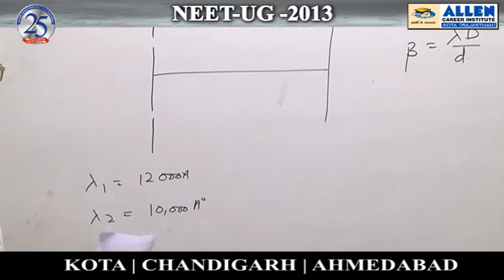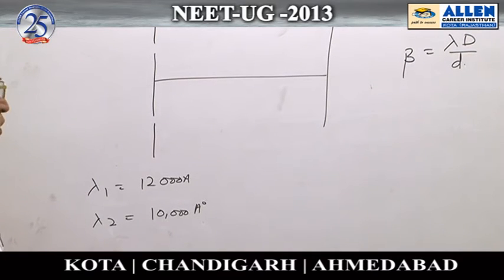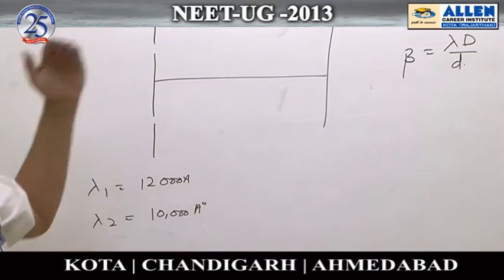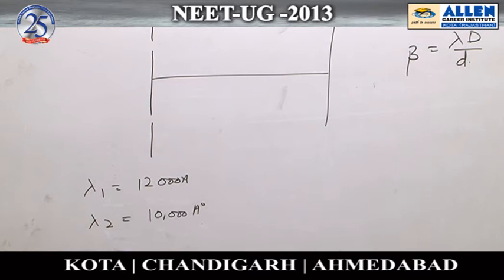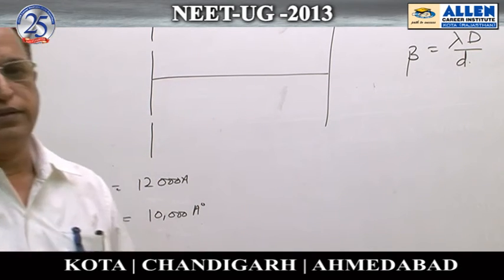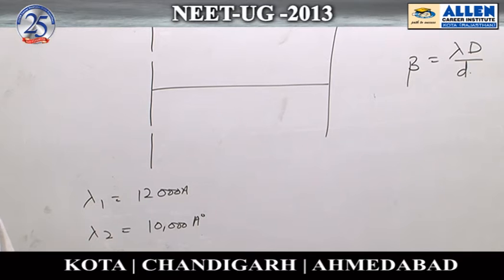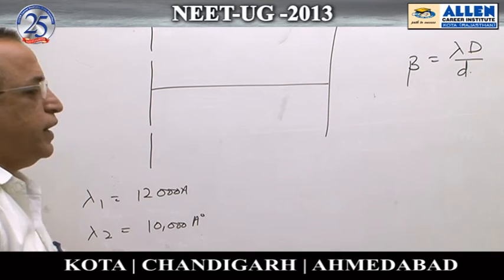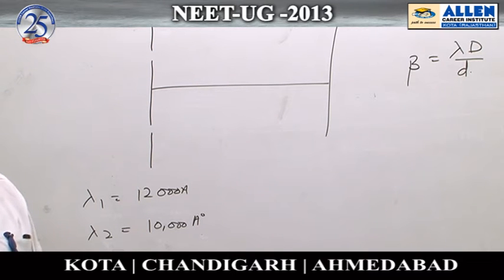Naturally, beta depends upon lambda — more lambda means more width, less lambda means less width. At the centre, their central bright fringe will overlap. Now we want to find where they will meet again, or where the maximas will coincide again.